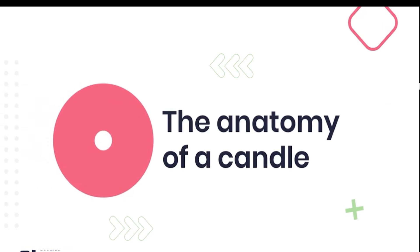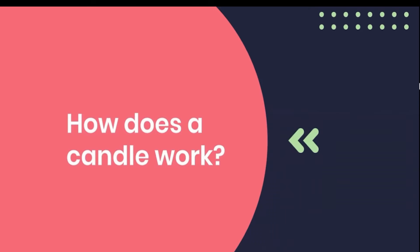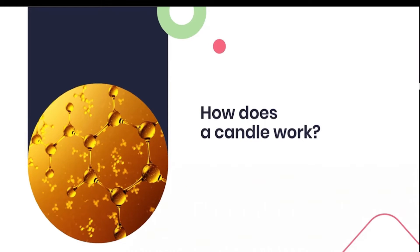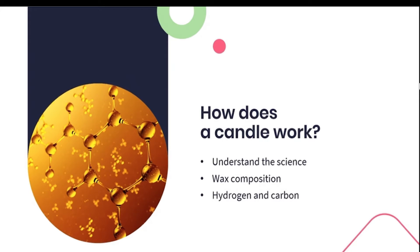Our first topic in this lesson is to look at how to identify the anatomy of the candle. To do that, we need to know how does a candle actually work? To discuss and name the anatomy of a candle, we need to first understand the science behind the burning of a candle. Candle wax is pretty much made up of hydrogen and carbon, making them hydrocarbons.